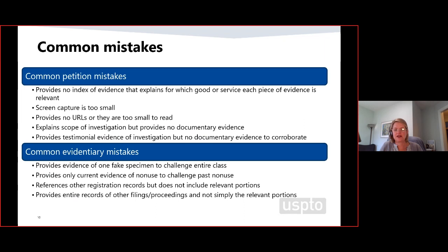Number two: start providing documentary evidence for each search you do, even if it's a negative search — meaning you did a search and found nothing. Give us documentary evidence of that. Show us the null search results. We want documentary evidence; we don't want you to just say 'I didn't find anything.' We want to actually have the web results showing that nothing was there.